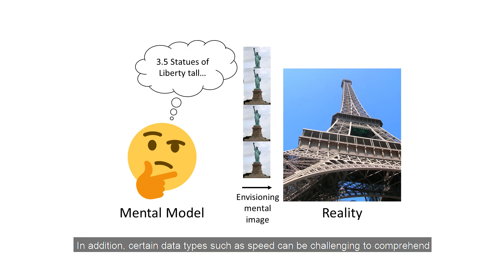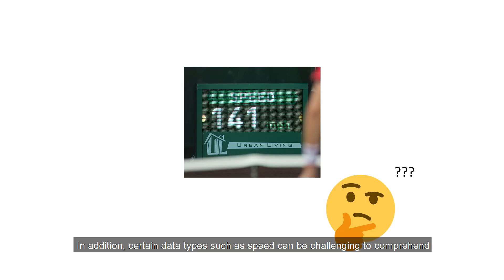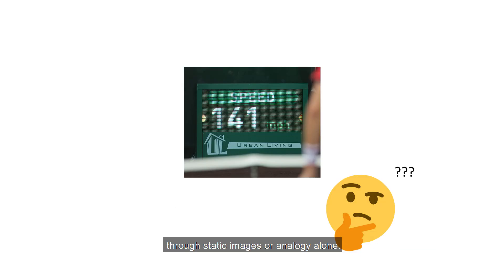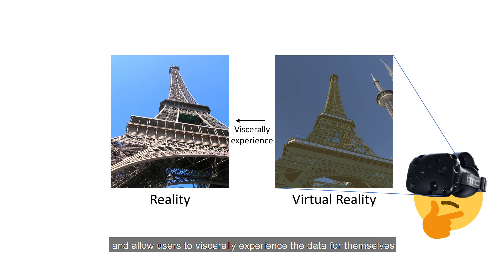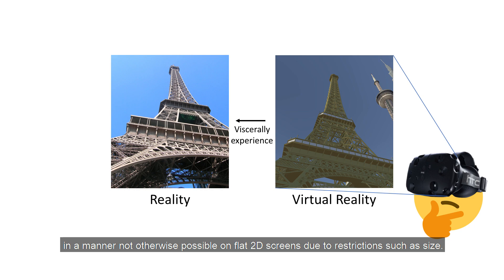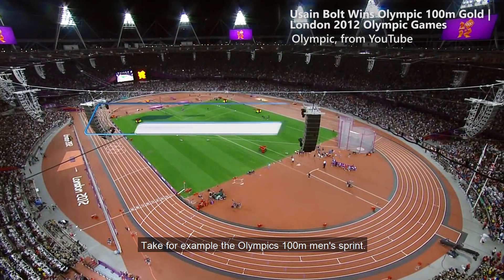In addition, certain data types such as speed can be challenging to comprehend through static images or analogy alone. Through the use of virtual reality, however, we can instead simulate these at true-to-life scales and allow users to viscerally experience the data for themselves in a manner not otherwise possible on flat 2D screens due to restrictions such as size.